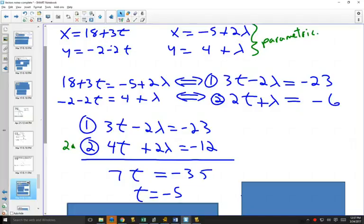This one wouldn't be hard to use substitution - you can see equation two would be really easy to get lambda by itself. But to review the elimination method, you take an equation and make one variable have the same coefficient, one positive and one negative. By multiplying equation two by two, I got 2λ and my first equation had -2λ. When I add those equations together, the lambdas disappear and I get 7t = -35, so t = -5.